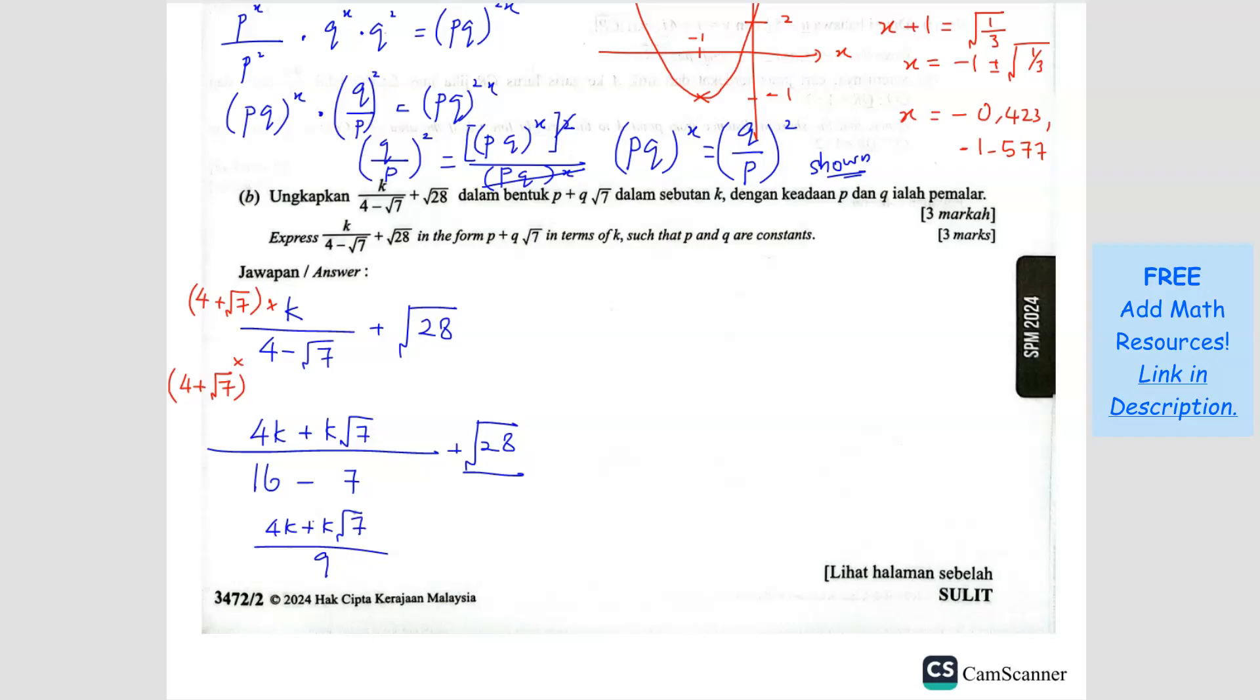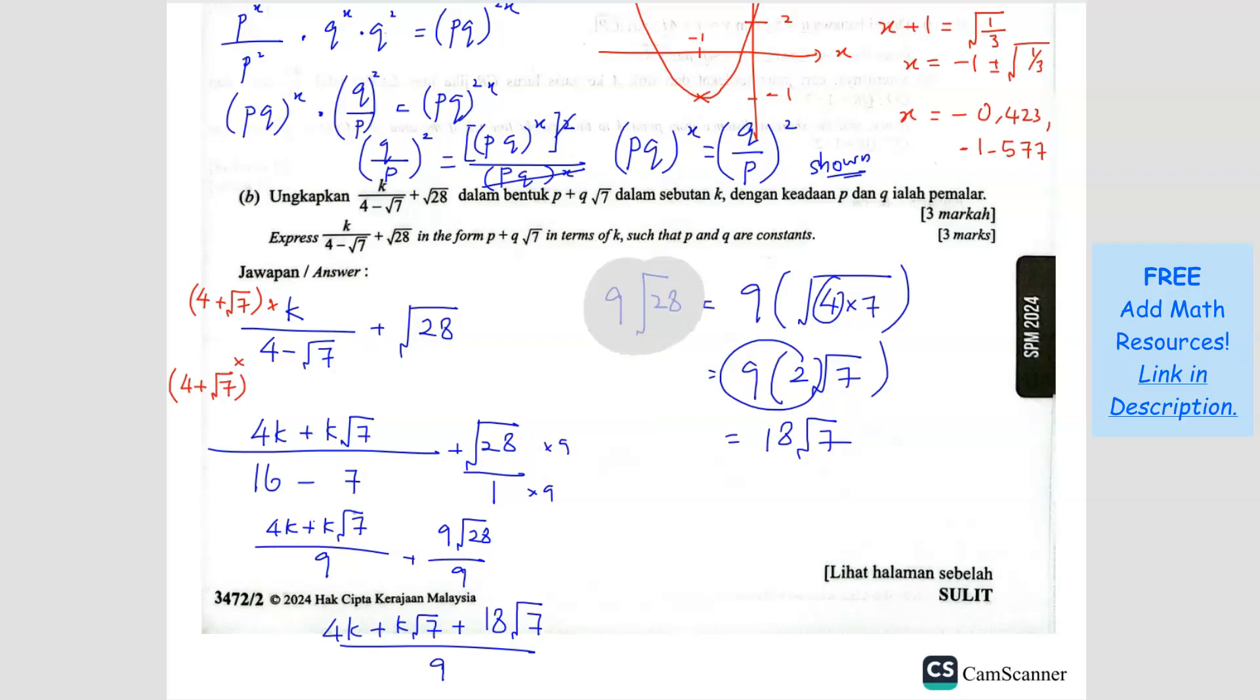Now this one is not a fraction, so it's going to be over 1, so I can make it become the same denominator by multiplying 9, so I get plus 9√28 over 9. So now I can combine the two fractions. So I get 4k plus k√7 plus... actually, we can simplify this. 9√28 - this 28 is actually 4 times 7. So the 4 here I can actually root, I can square root it. So square root of 4 is 2, so 2√7. So 9 times 2 is 18√7. So I can just write 18√7 over 9.